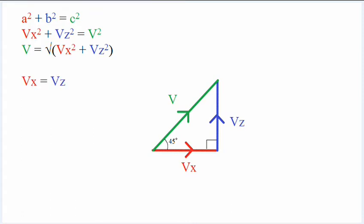It's common sense, really, but mathematically, it's still the same because it's an isosceles triangle. And then, once we substitute that in, we can combine them, pull out the Vz, and we get V equals Vz times the square root of 2.